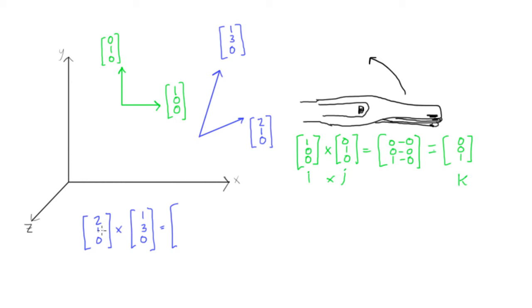Okay, so now the first element is going to be 1 times 0 minus 3 times 0. So we'll have 0 minus 0. The last element, this is just the habit that I do it. You can do the second element first. This is the way I like to do it. So we'll have 2 times 3 minus 1 times 1. So we'll have 6 minus 1. Oh, sorry, that's the last element. 6 minus 1. And then the middle element, you switch the direction. So 0 times 1 minus 2 times 0. So we get 0 minus 0.